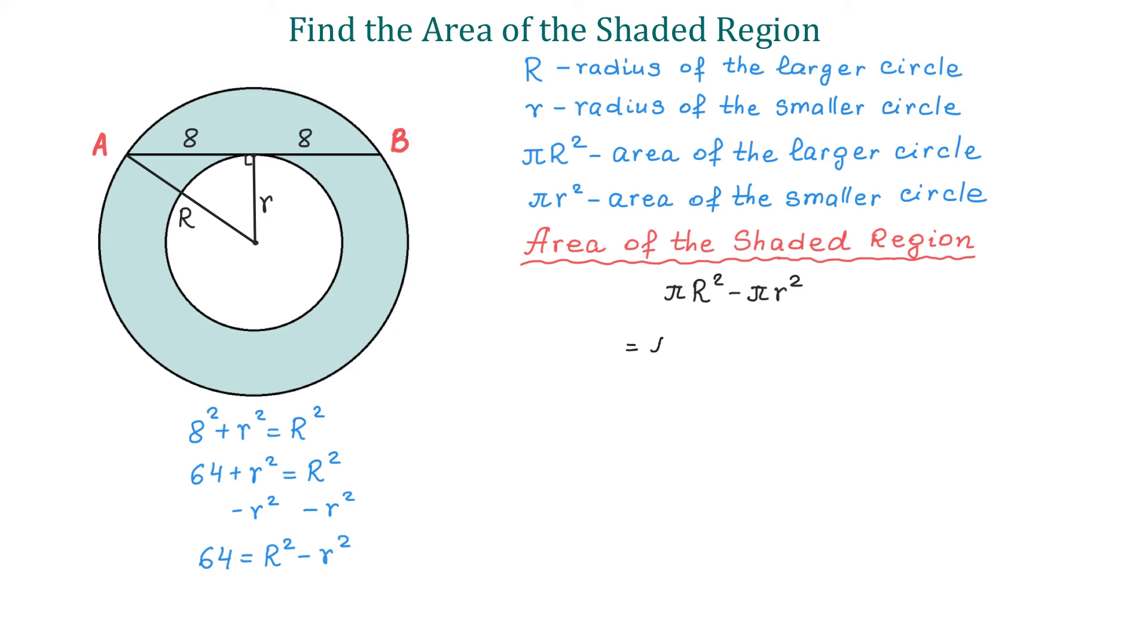Then we will have π(R² - r²). We will replace R² - r² with 64, and we get 64π. This is the area of the shaded region.